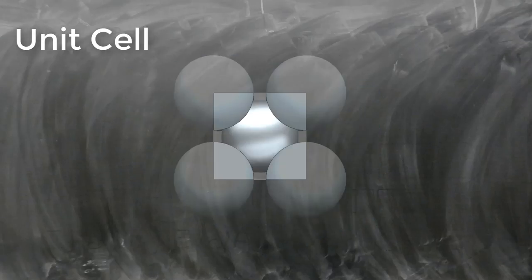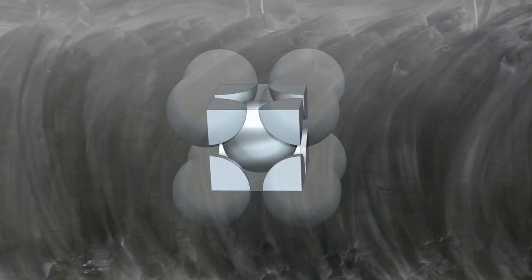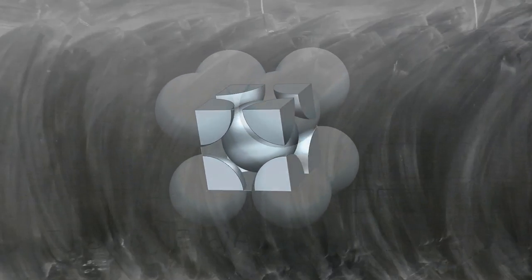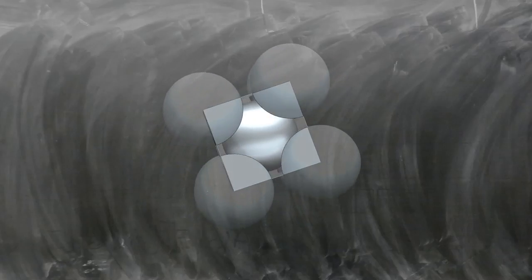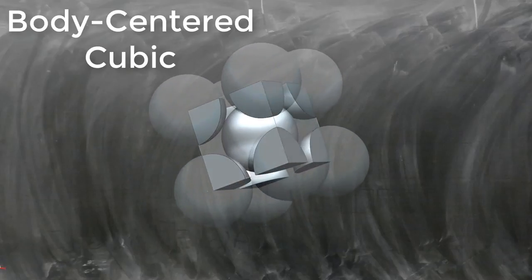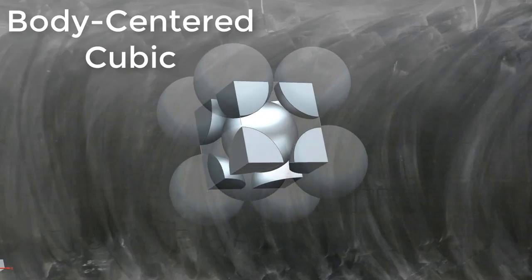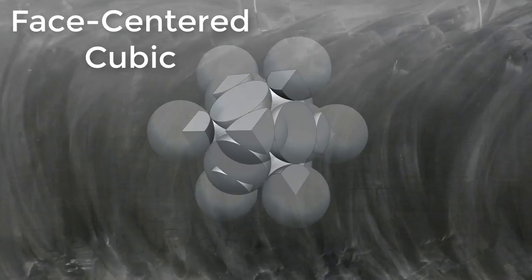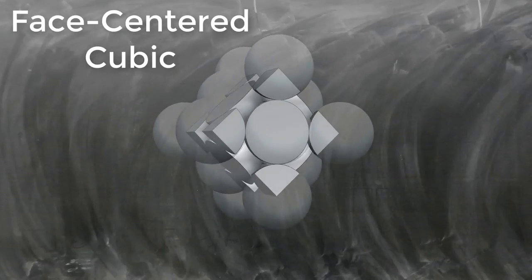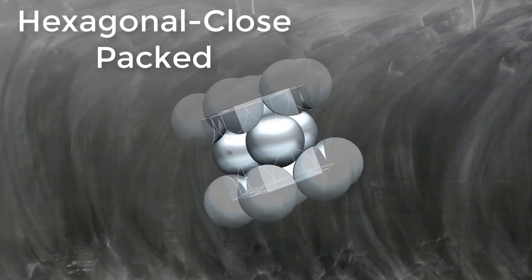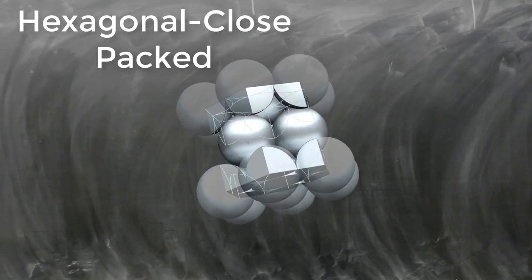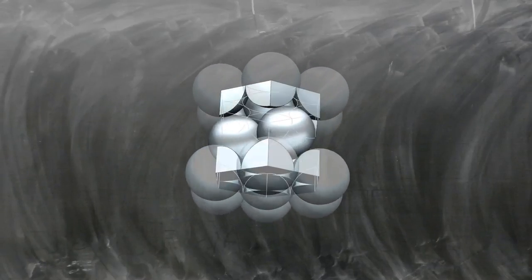Different metals have different unit cell shapes or lattice structures. Some of the most common crystal lattice structures seen in metals are body centered cubic, face centered cubic, and hexagonal close packed. Let's have a look at each of these.